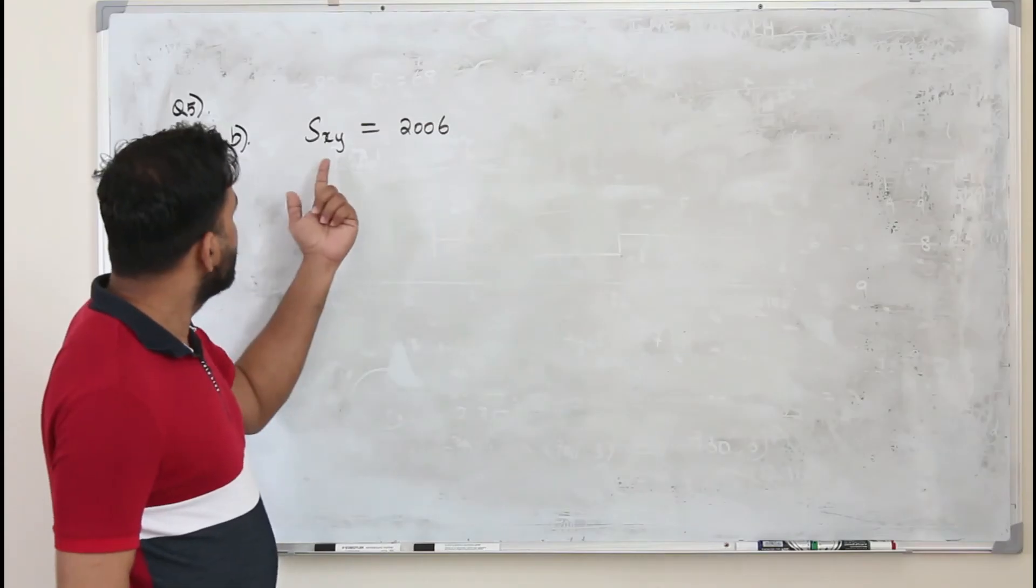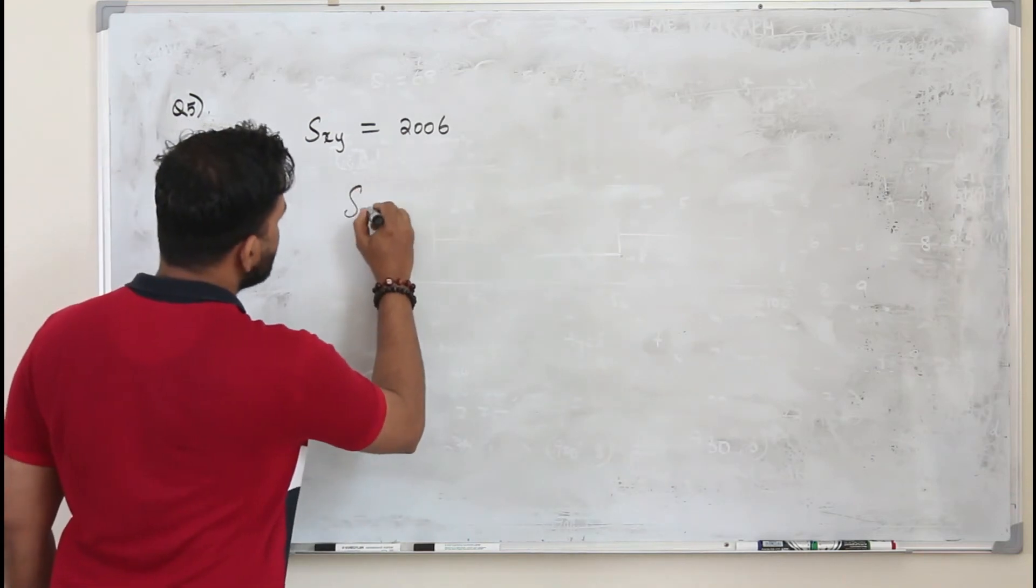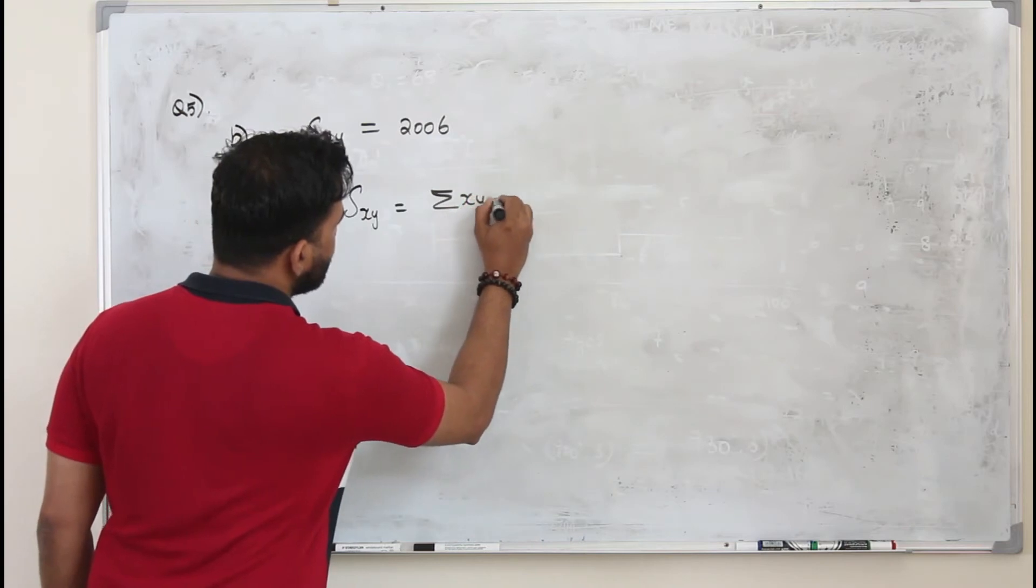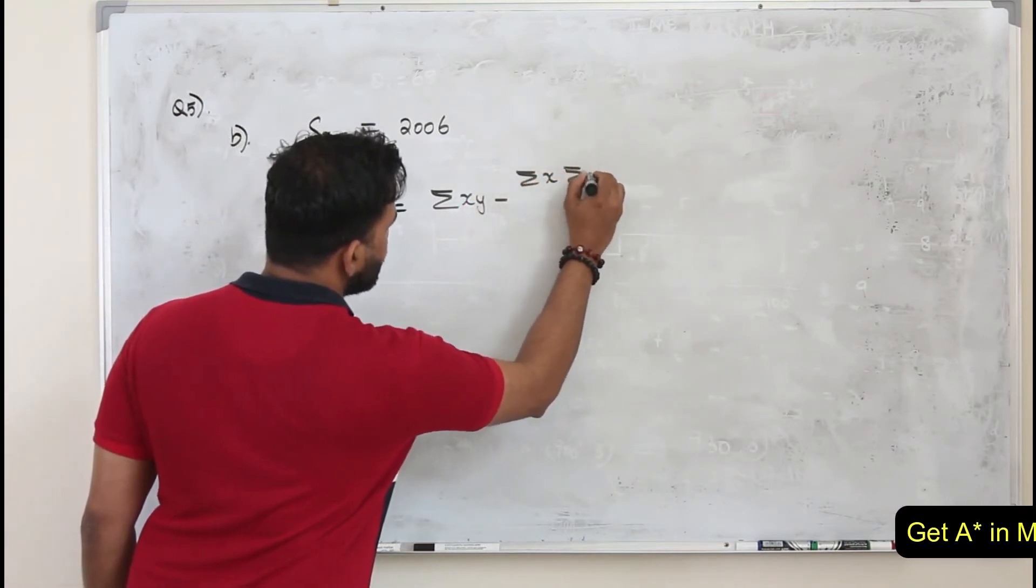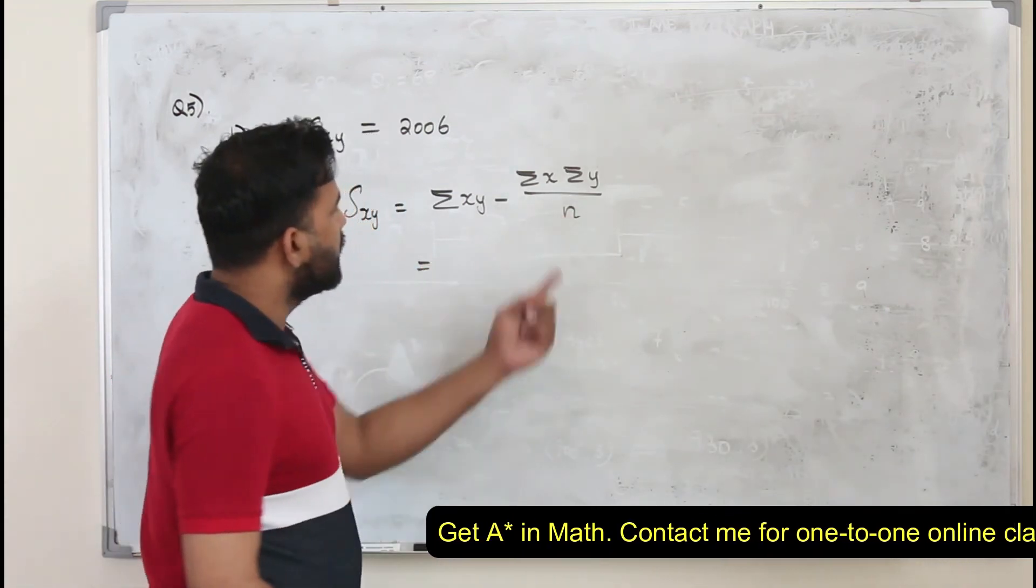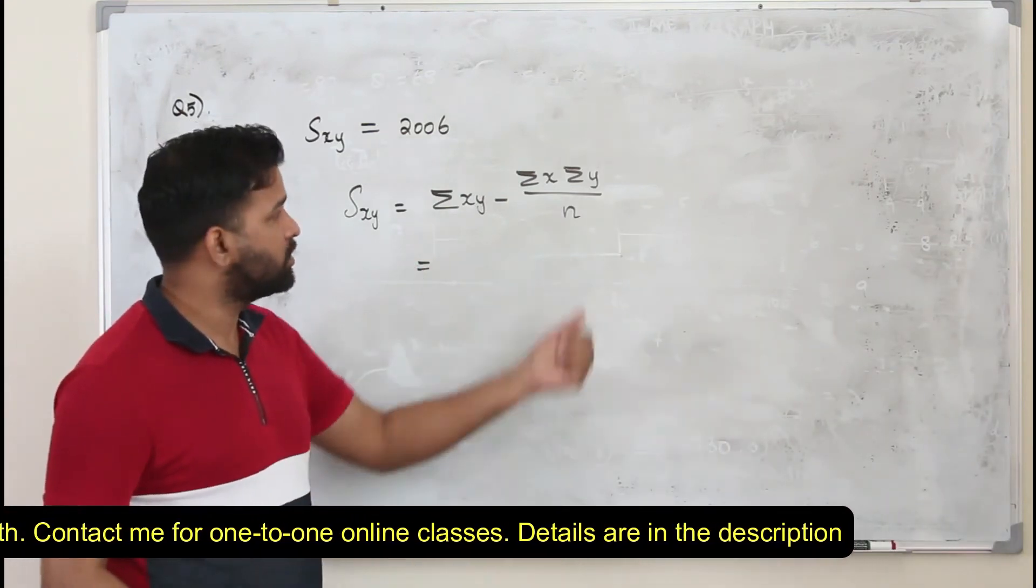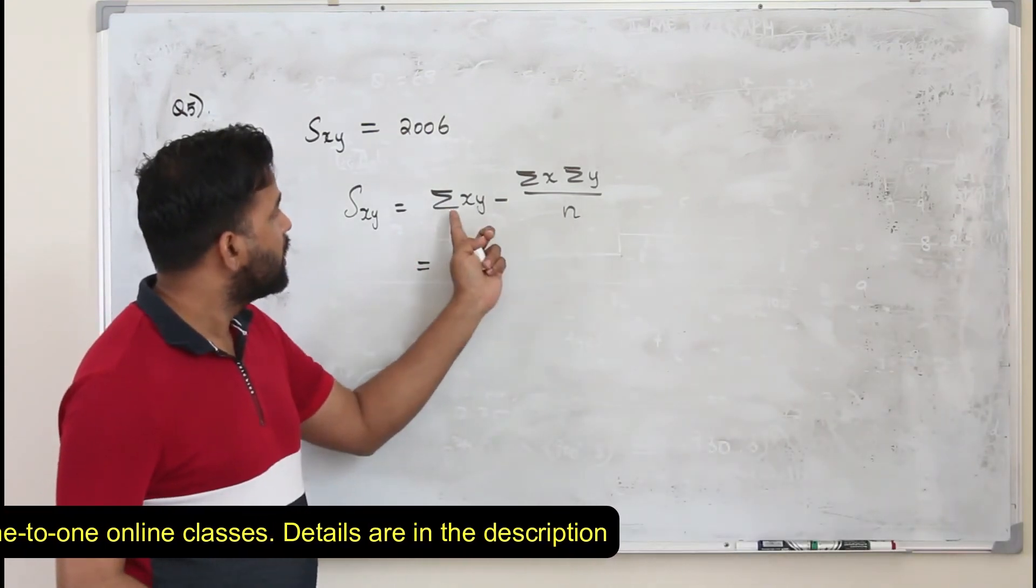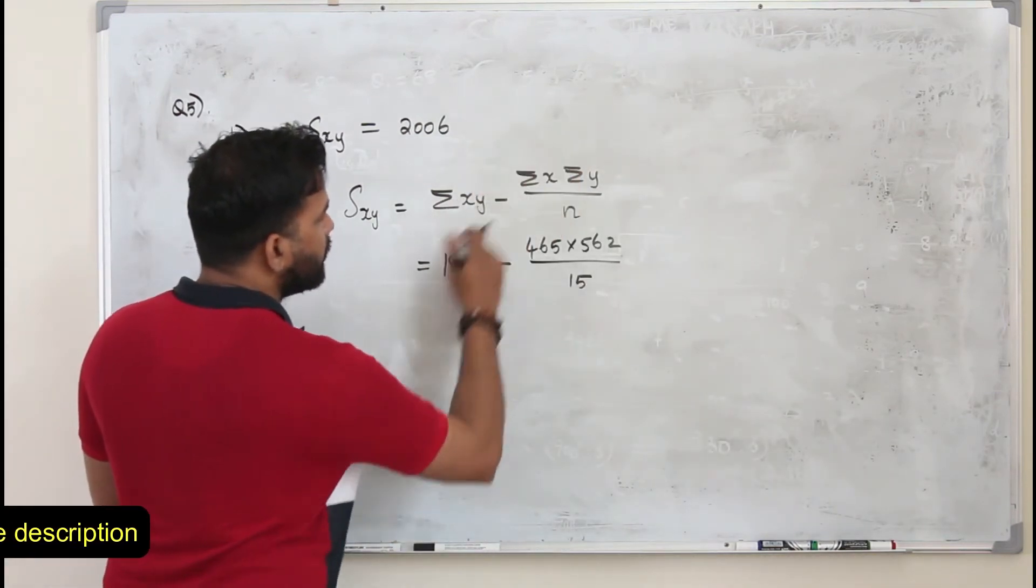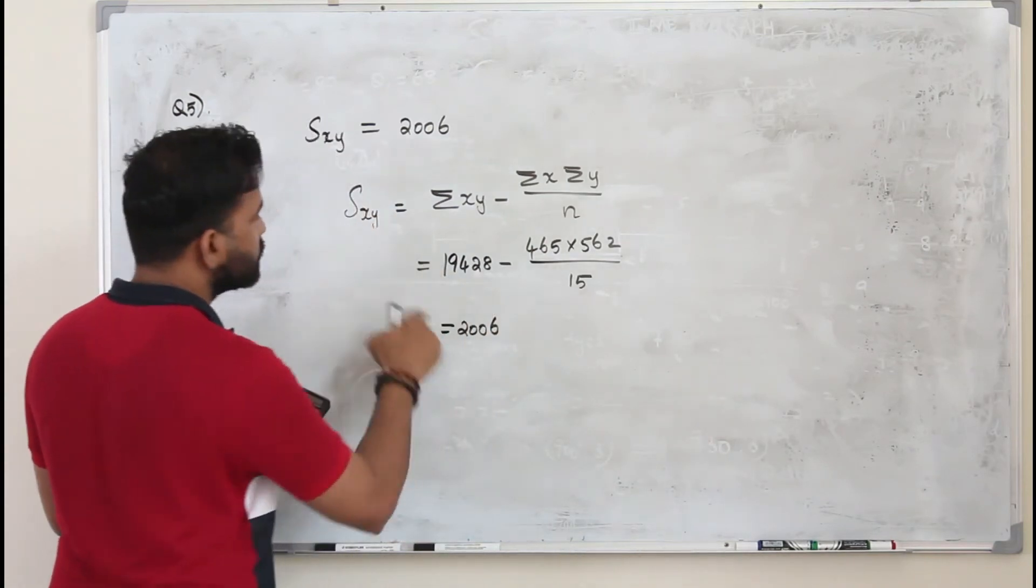So we are going to find Sxy here. Use the formula for Sxy, which is Σxy minus Σx times Σy divided by n. n is the number of terms, in this case 15 managers. All these values are given, so just plug in the values here. You straight away get the answer 2006. That's Sxy.